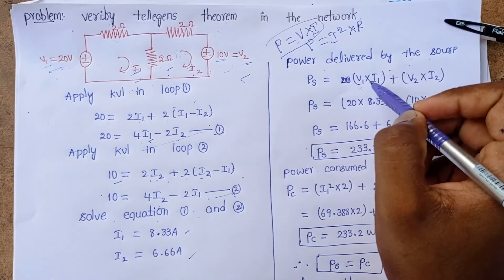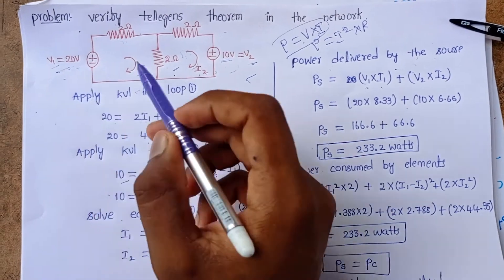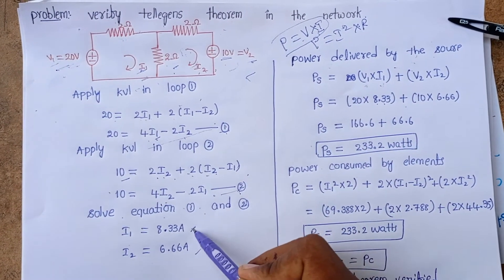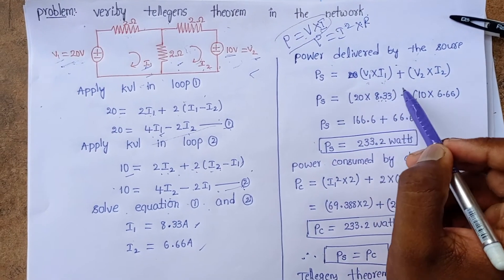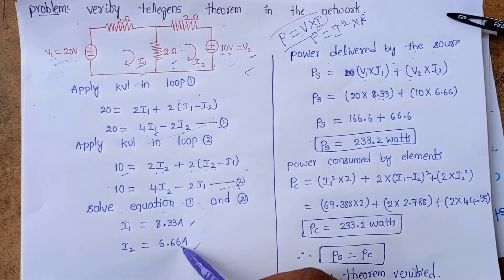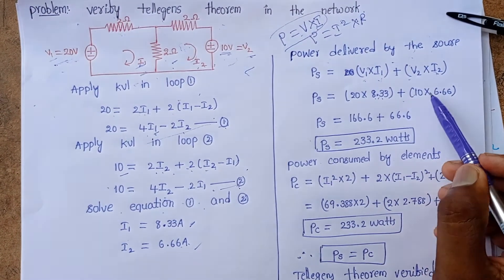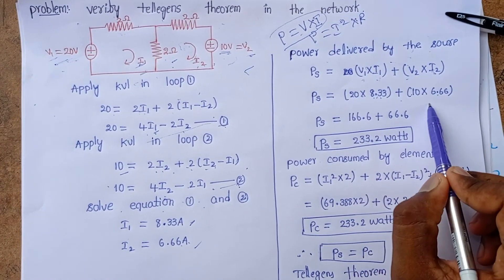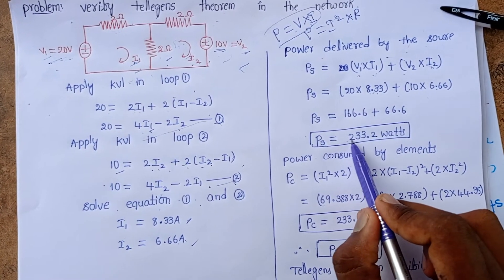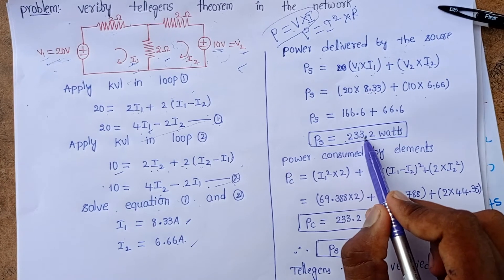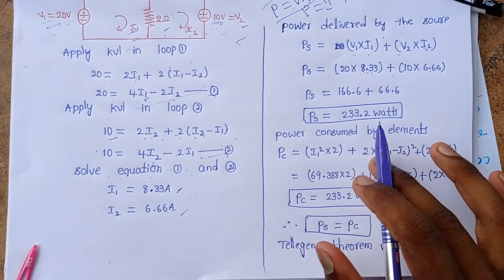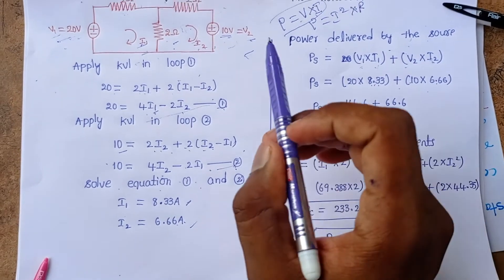Substituting values: V1 = 20 V, I1 = 8.33 A, V2 = 10 V, I2 = 6.66 A. Calculating: (20 × 8.33) + (10 × 6.66) = power delivered by the sources, which gives PS = 233.2 watts.